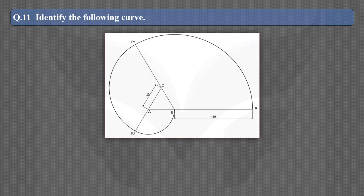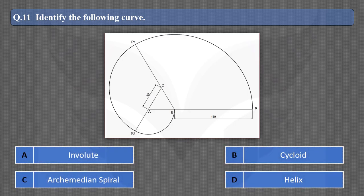Next question: Identify the following curve. This curve and the previous curve have almost the same shape — this is also an involute. The only difference is this is an involute of a triangle, whereas the previous one was an involute of a circle. So the correct option is A.